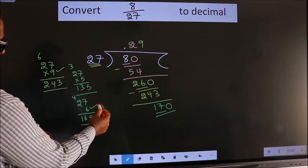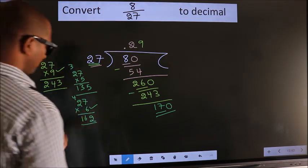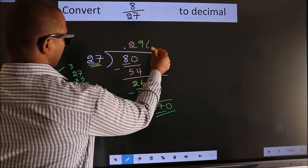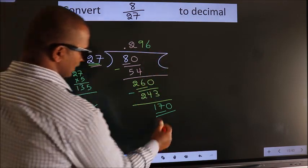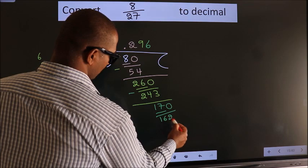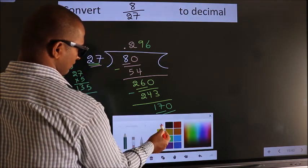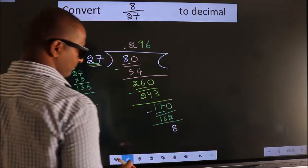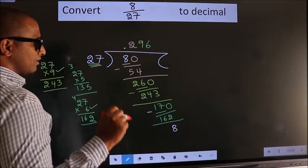So we go with 6 times. So 6 times 162. Now we subtract, we get 8. Now here you observe, we had 8 before, we got 8 again.